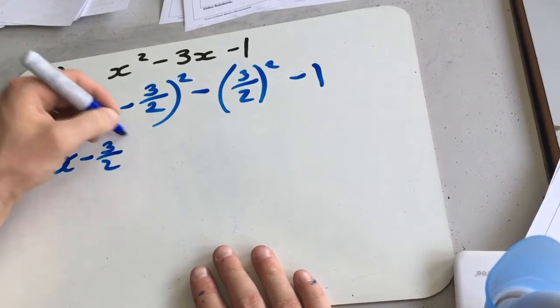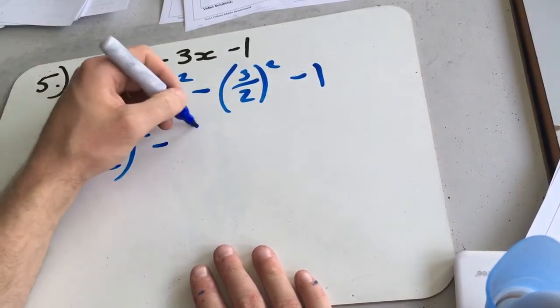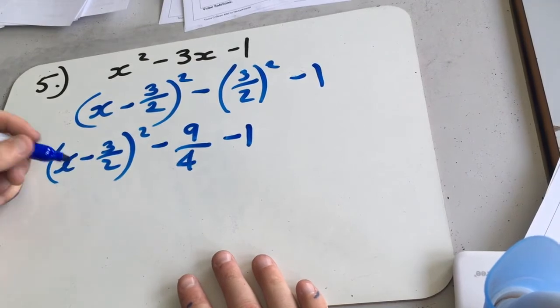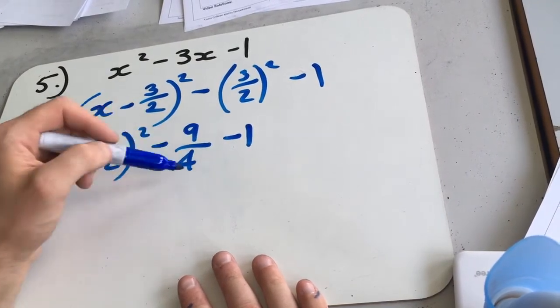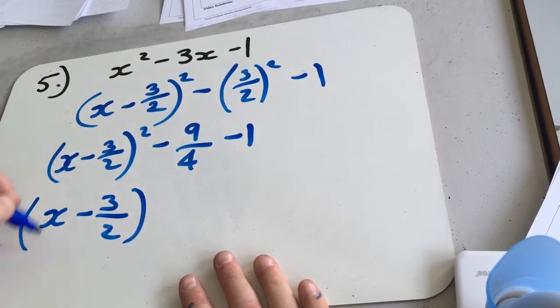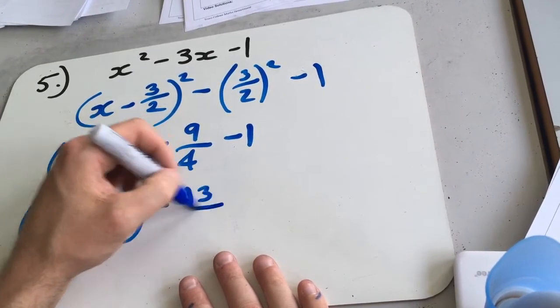So x minus 3 over 2 squared, take away 9 over 4, take away 1, which is going to be 13 over 4. So x minus 3 over 2 squared, minus 13 over 4.